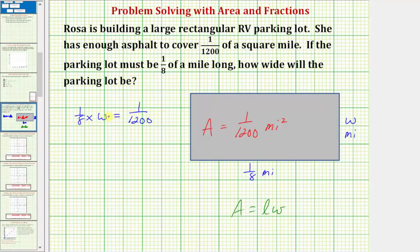Well 1/8 times W is just 1/8W. So we have 1/8W is equal to one over 1,200. And now because 1/8W means 1/8 times W, we might be thinking we should divide both sides by 1/8 to solve for W, which we could do. But instead of dividing by a fraction, we normally multiply by the reciprocal.